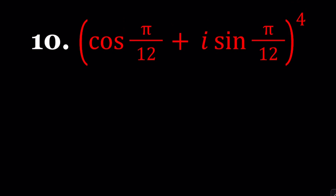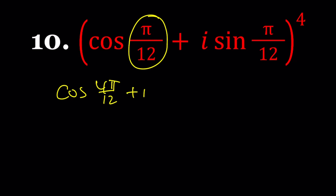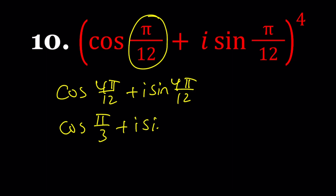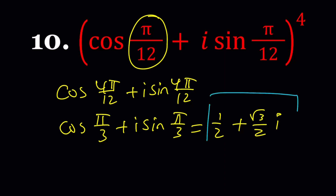Let's take a look at number 10. We have a number written in polar form raised to the 4th power. De Moivre's theorem says multiply the argument by 4 and raise r to the 4th power. Here r is 1, so we just multiply π over 12 by 4, giving 4π over 12, which simplifies to π over 3. Cosine π over 3, which is cosine 60°, equals one-half. Sine π over 3, which is sine 60°, equals root 3 over 2. Multiply by i and you're done.